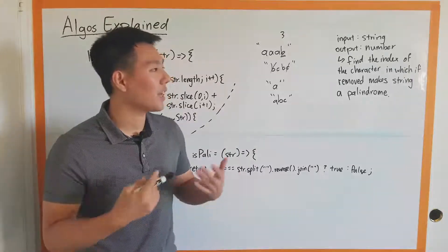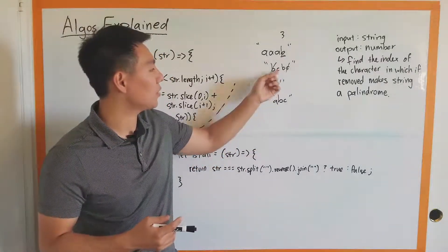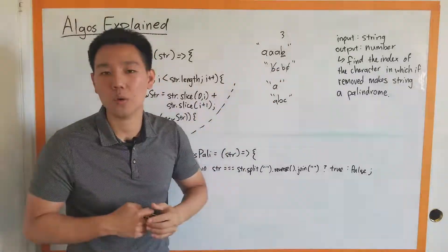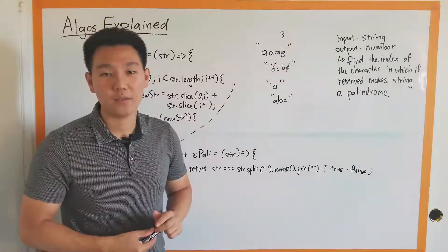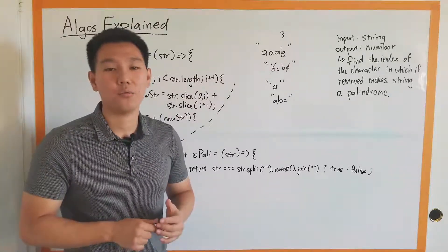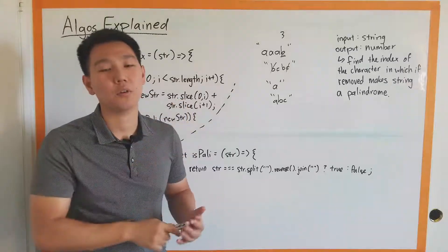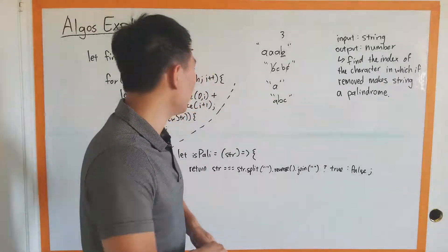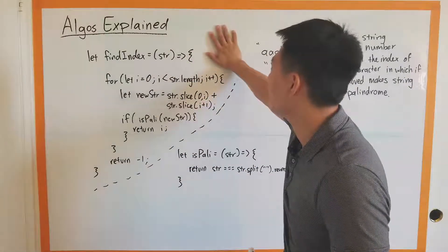We're not asking for all the indexes in a case like B, C, B, C — we're asking for just one. So we can choose to return early if we found our answer early on. If we never find the answer, we'll probably have to go through the entire string. And that's pretty much exactly what we did in the code.